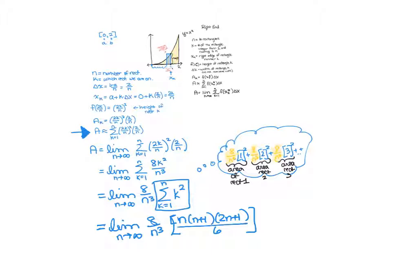Okay, and now we just need to find this limit. This is a limit like we found at the beginning of the semester. So this is the limit as n goes to infinity. If we multiply all this stuff out, we're going to get 16n cubed plus 24n squared plus 8n, all over 6n cubed.